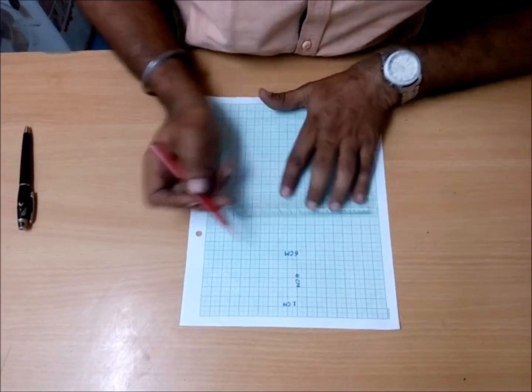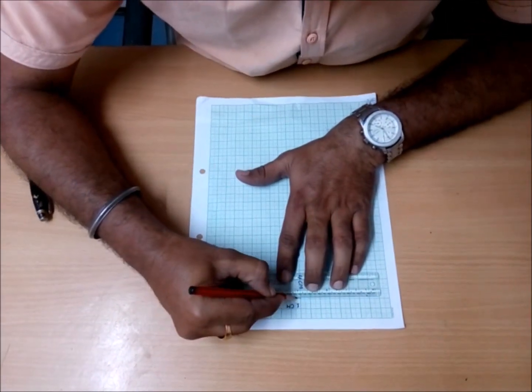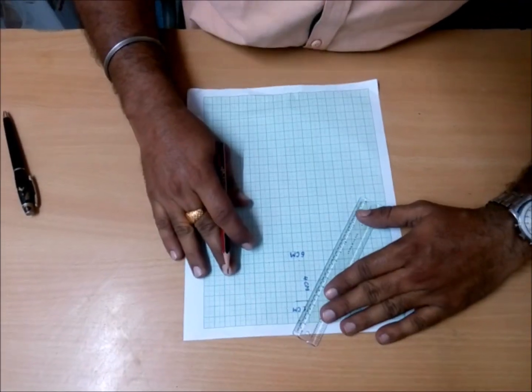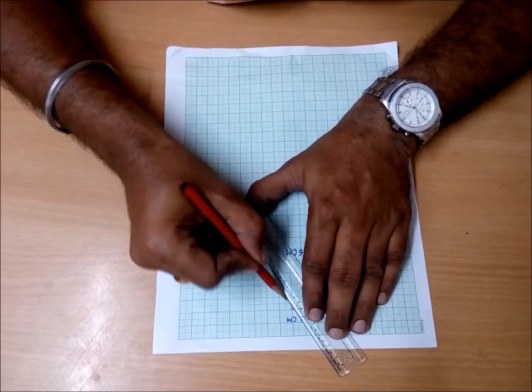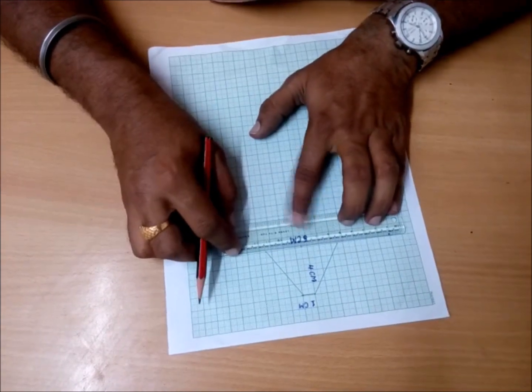First of all, take a graph paper and draw a trapezoid with top 1 centimeter, base 6 centimeter, and height 4 centimeter. You can increase these dimensions but the ratio should be the same.